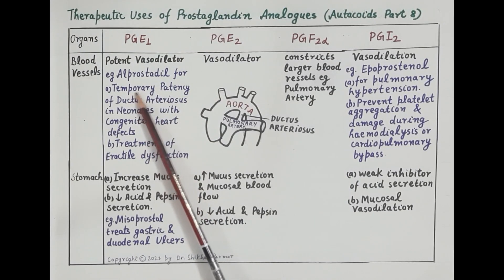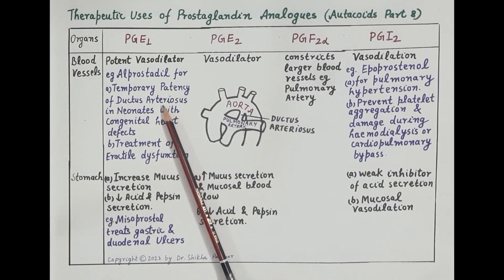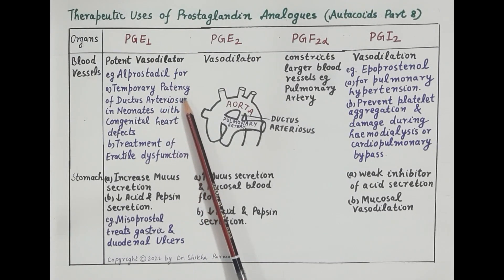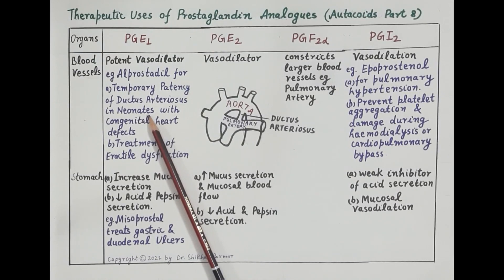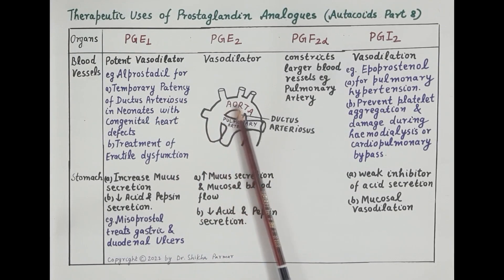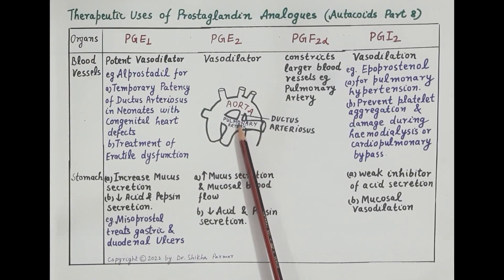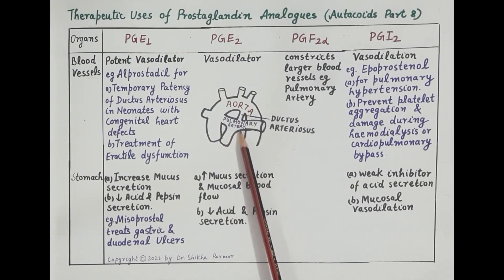Alprostadil is a synthetic prostaglandin E1 analog used for temporary patency of the ductus arteriosus — that is, to keep the ductus arteriosus open in neonates (newly born babies). Normally, the ductus arteriosus remains open in the fetus but closes after birth. The ductus arteriosus is a blood vessel that connects the aorta with the pulmonary artery.